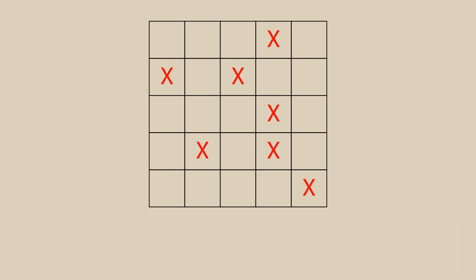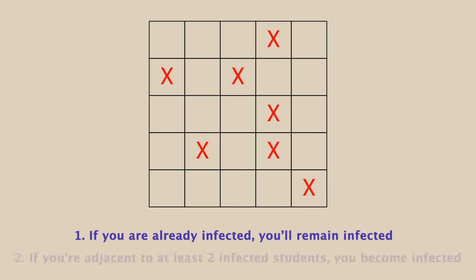Now let's say some of these students become infected with a disease, and on top of this, every minute the disease spreads according to the following two rules. One, if you're already infected, you'll remain infected, and two, if you're adjacent to at least two infected students, you become infected as well.